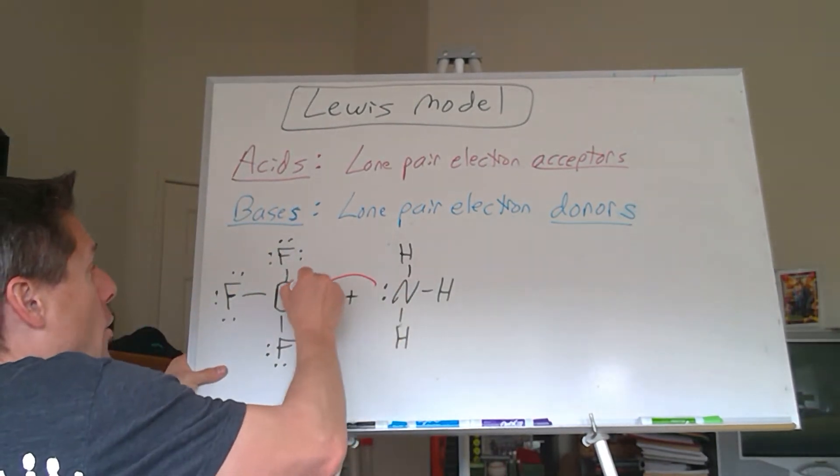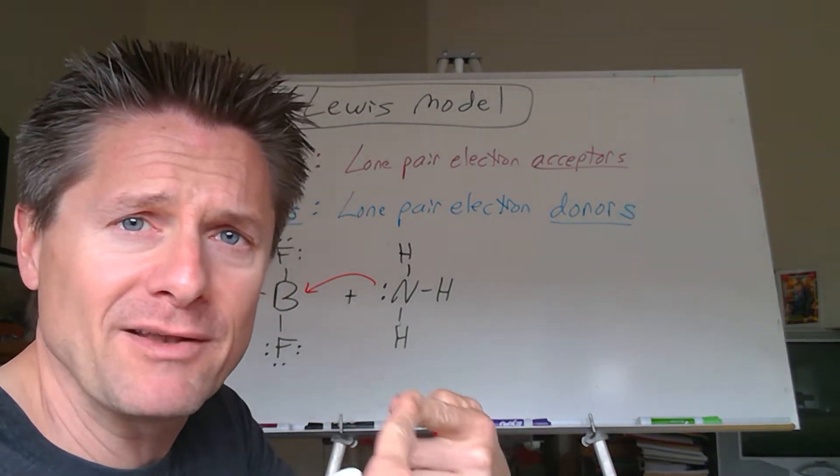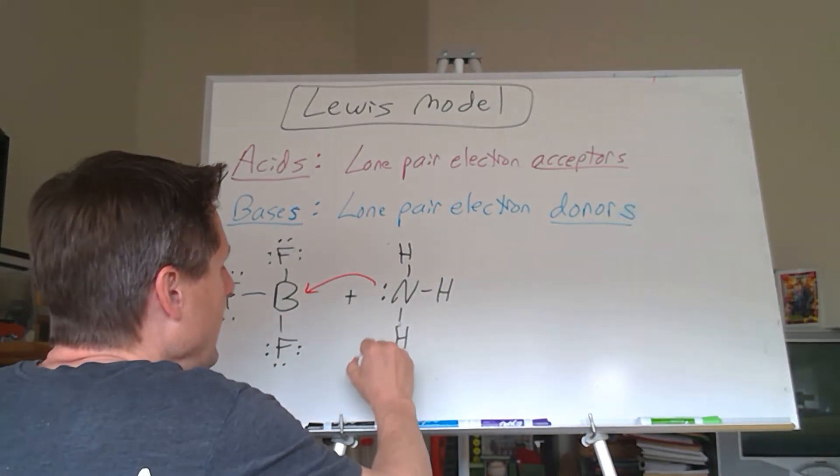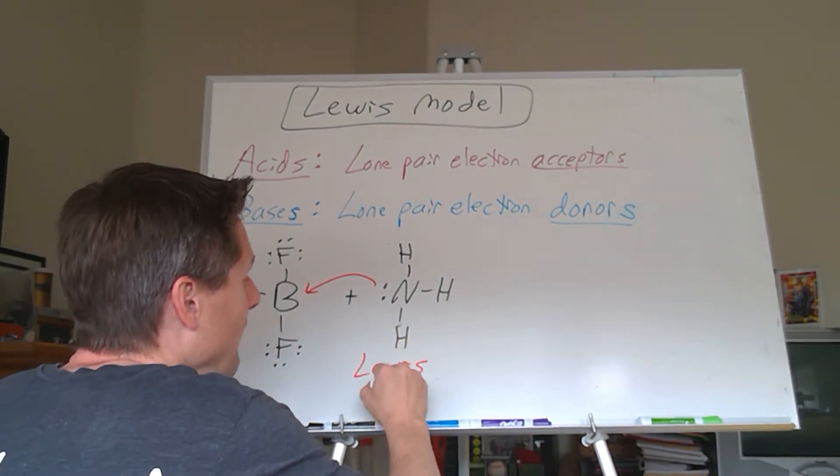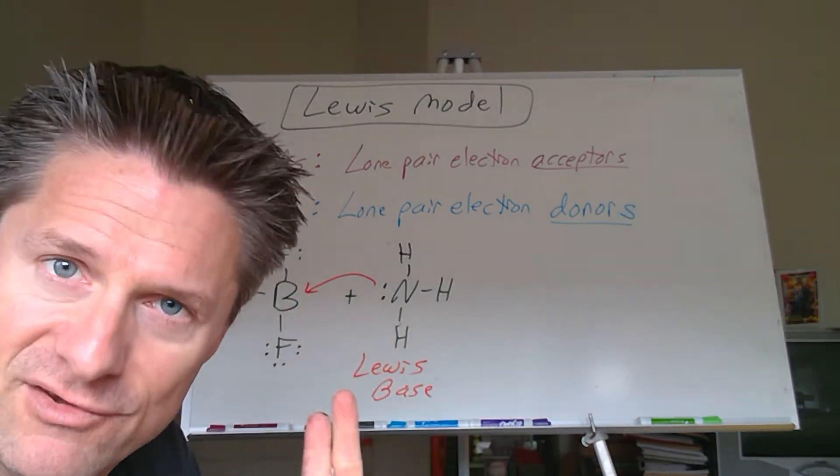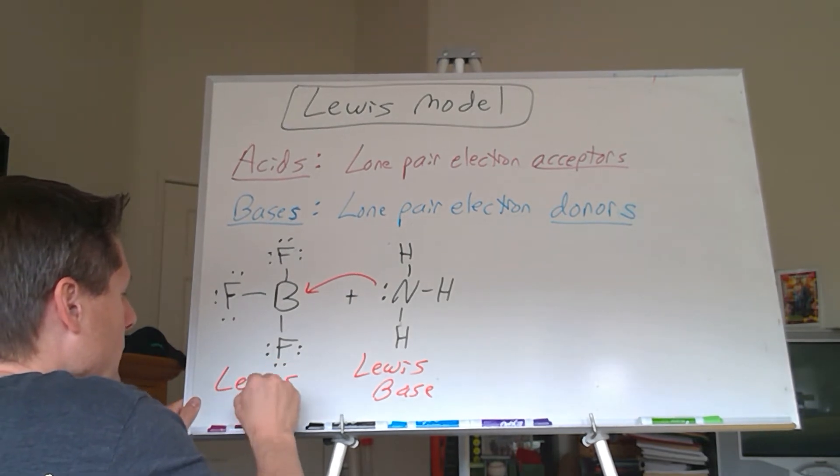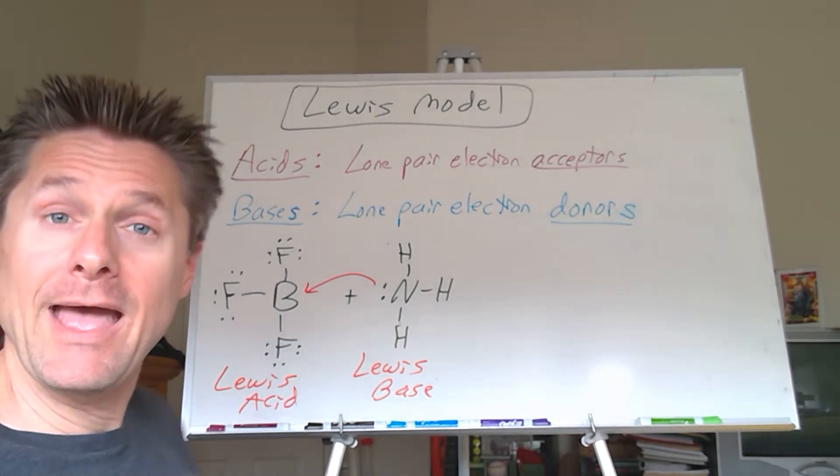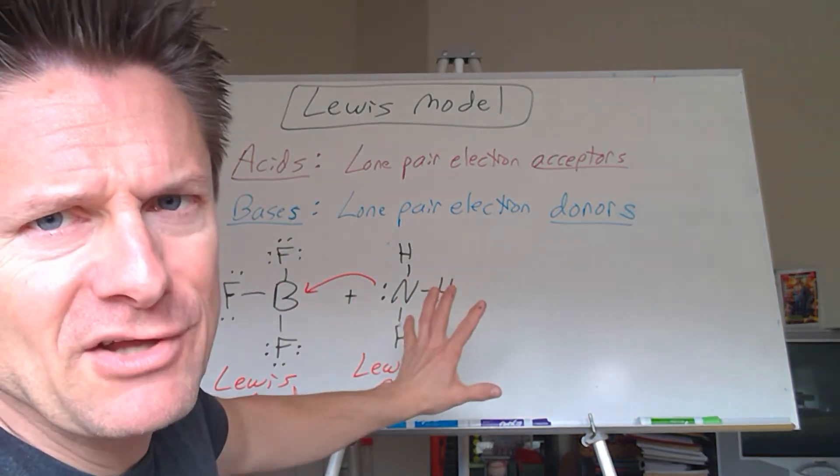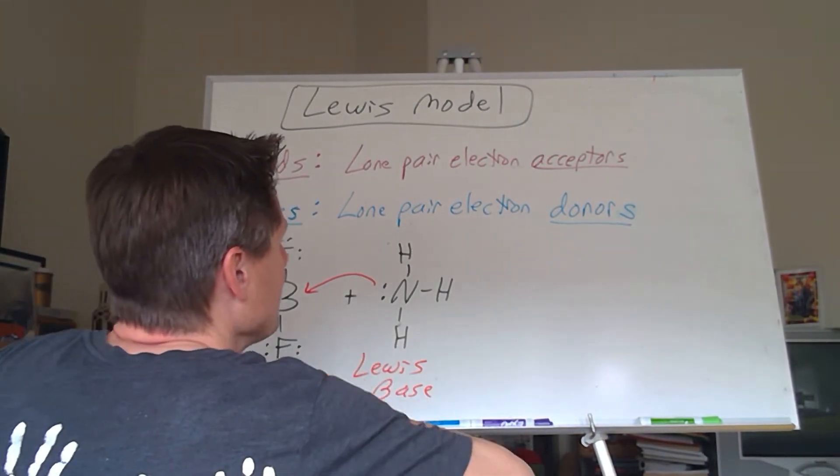And the nitrogen goes, I'll show you my lone pair. And so it's going to go boom, just like that. And that's going to form a coordinate covalent bond, just a regular single bond. But this is donating the lone pair. So this would classify as a Lewis base. It has a species with a lone pair. It's donating a lone pair. This is accepting it. So this would be my Lewis acid. Not too tough. This would be tough to do with the Arrhenius concept and the Bronsted-Lowry concept.